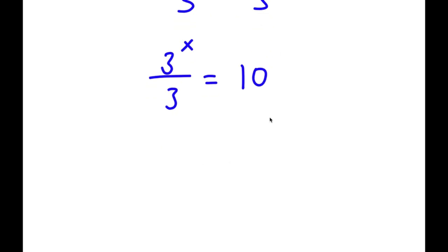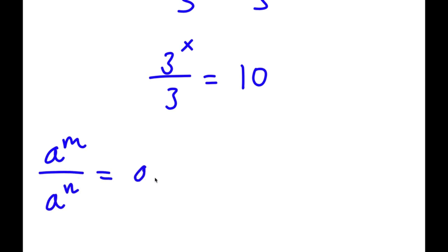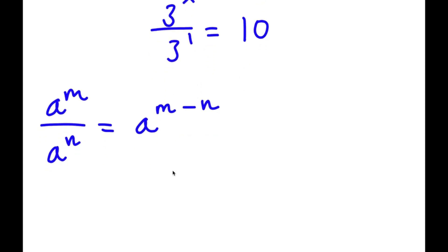If you have something in the form a to the power of m over a to the power of n, this is equal to a to the power of m minus n. So 3 to the power of x over 3 — well, 3 is the same thing as 3 to the power of 1. So I have 3 to the power of x over 3 to the power of 1 is equal to 10, which simplifies to 3 to the power of x minus 1 is equal to 10.